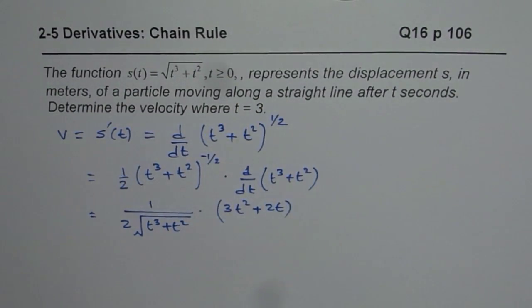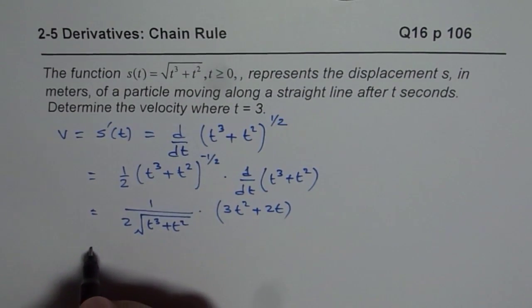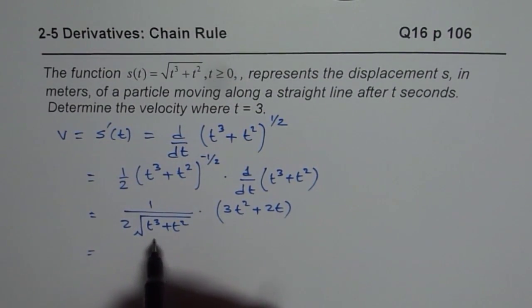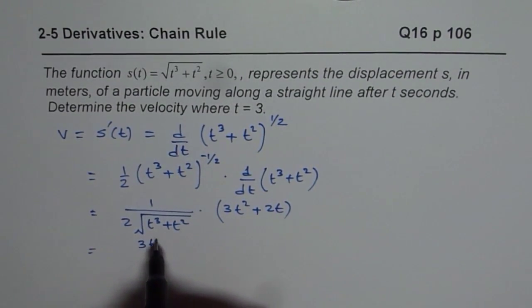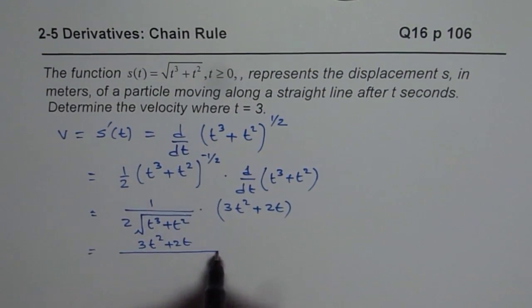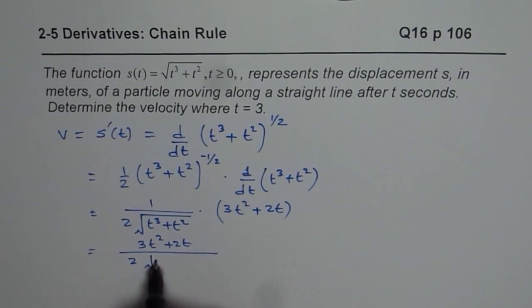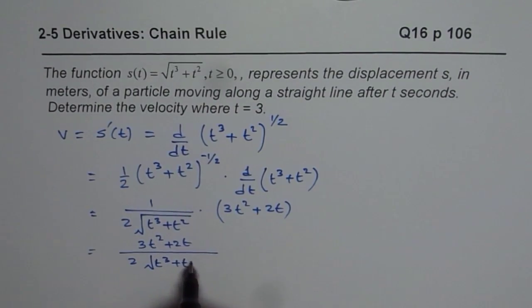So that is the derivative of this function. We could write this as 3t square plus 2t divided by 2 square root of t cube plus t square.